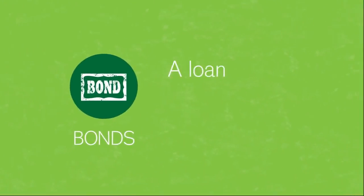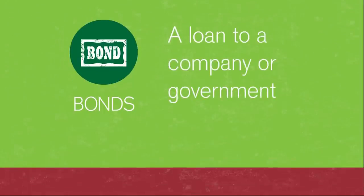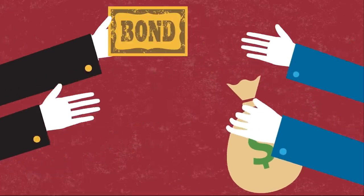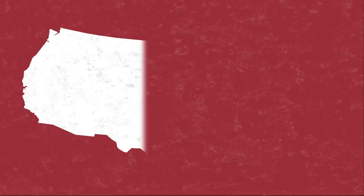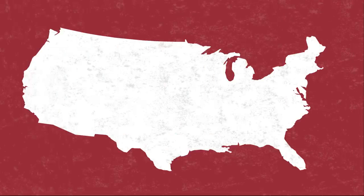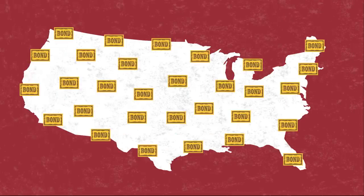Bonds are just a loan to a company or government. They borrow by selling a bond, which is simply a promise to repay the buyer in a fixed number of years at a fixed interest rate. When you hear about the U.S. government borrowing money, have you ever wondered who they borrow from? Chances are, it's you through the investments you make in bonds.